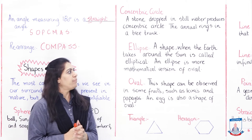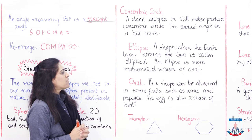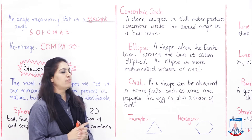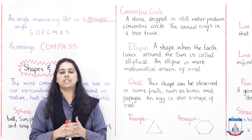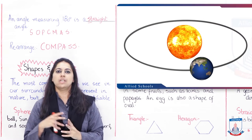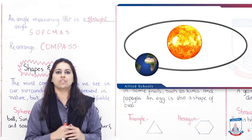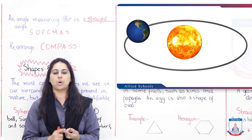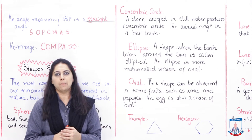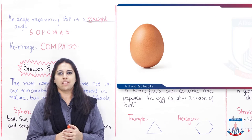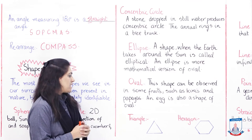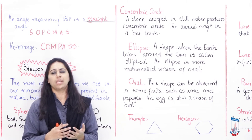Next is ellipse. The shape the Earth takes around the sun is called elliptical. An ellipse is a more mathematical version of oval - it is a shape similar to oval. This shape is formed when the Earth goes around the sun - that path is called elliptical. Next is oval - a very common shape seen in eggs, papaya, and many fruits.